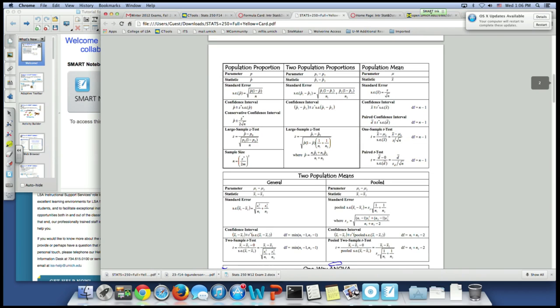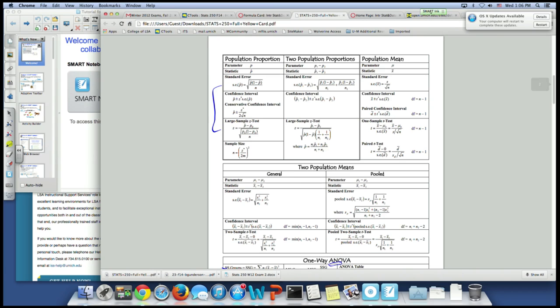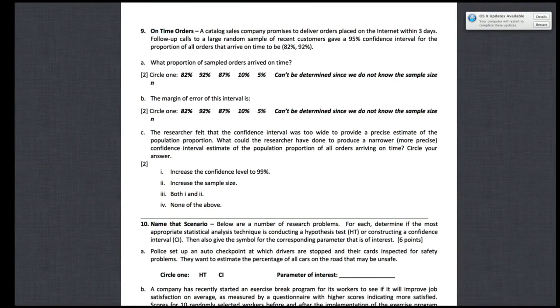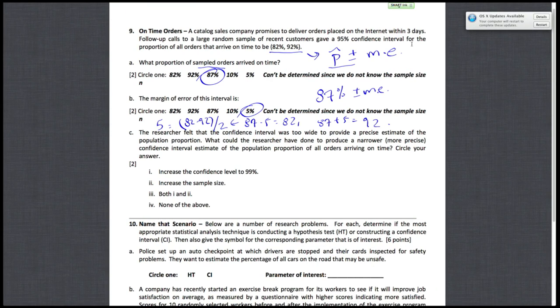the way to narrow your confidence interval is to decrease your standard error. And since for both general and conservative, you calculate that by dividing by your sample size, then if you increase your sample size, then your margin of error would decrease, and your confidence interval would be narrower. So, the way to make your confidence interval more narrower is to increase your sample size.